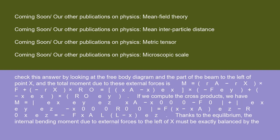Mxz = (rB - rx) × RB = |ex ey ez; L-x 0 0; 0 RB 0| = F(xA/L)(L-x)·ez. We can check this answer by looking at the free body diagram and the part of the beam to the left of point x, and the total moment due to these external forces is M = (rA - rx) × (-F) + (-rx) × RO = |ex ey ez; xA-x 0 0; 0 -F 0| + |ex ey ez; -x 0 0; 0 RO 0| = F(x - xA)·ez - RO·x·ez = -F(xA/L)(L-x)·ez.